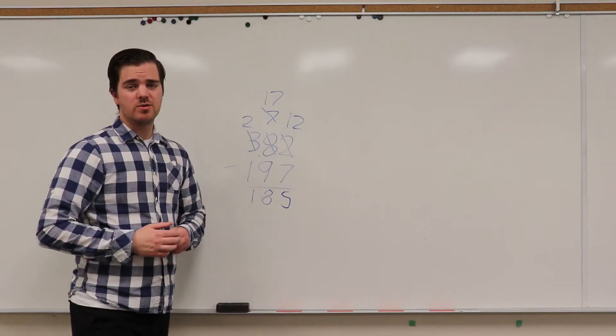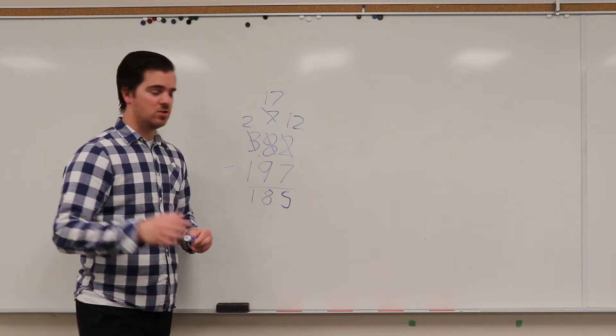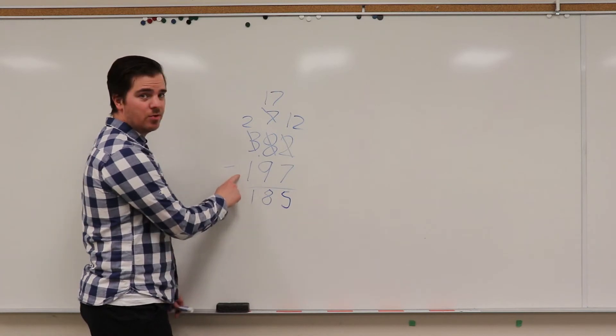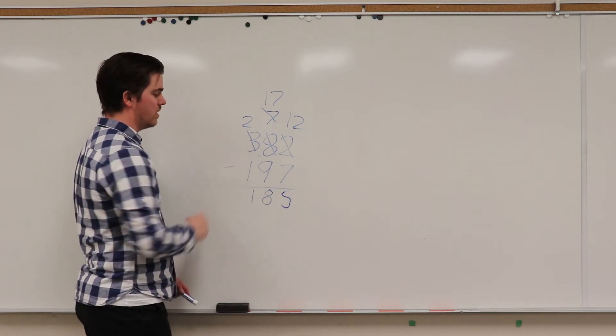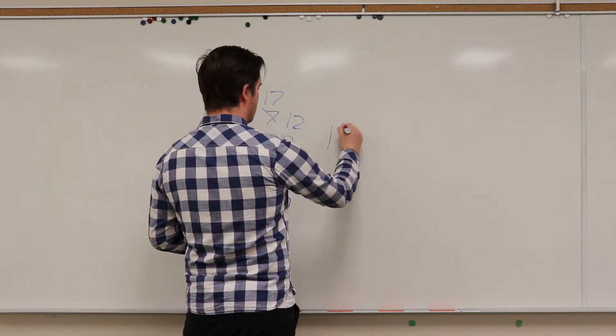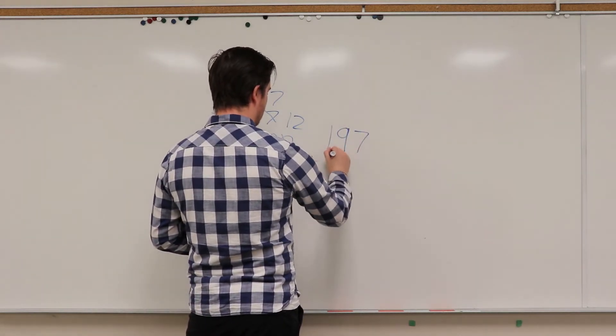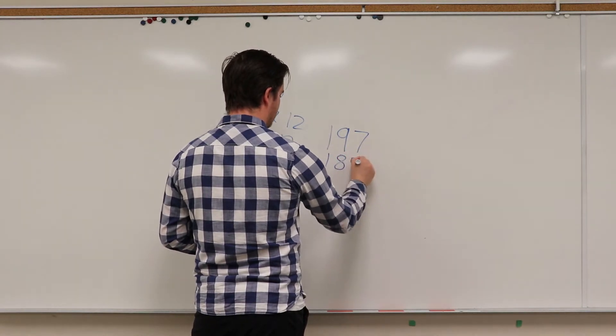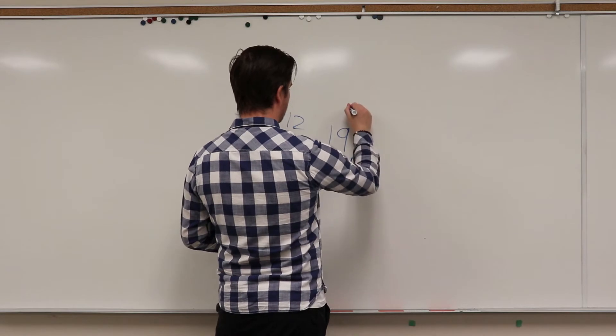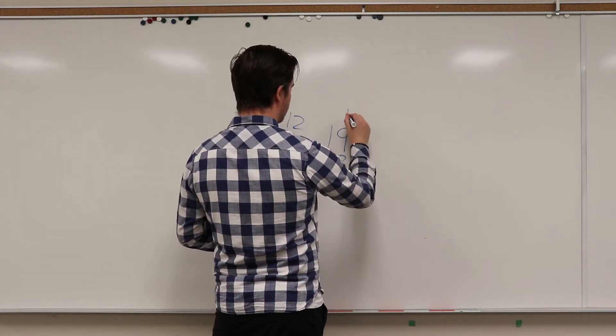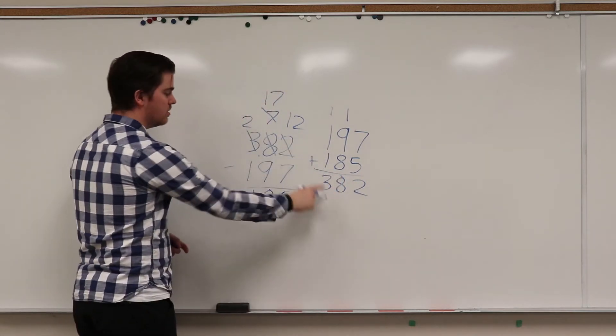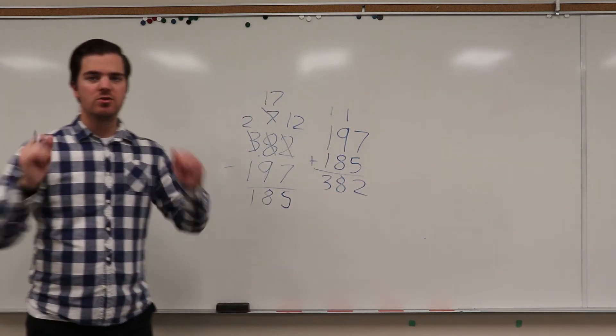Now, subtraction, there's a way to double check your answer. Let me show you. You take your answer and then you add it to the smallest number in the question and it should equal that. Let's see if we did it right. So 197 plus 185: seven plus five is twelve, carry one. Nine plus one is ten, plus eight is eighteen. 382. 382. Success!